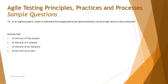This question asks when software is first expected to be delivered that will provide value to the customer. It does not mean handing over the product or releasing directly to end users. The word 'delivered' is a little tricky — it may make you think about releasing to the market, but it's really about the first view of the product, which certainly adds value even when you just demonstrate what you've done. The four options are: at the end of the project, at the end of the release, at the end of an iteration, and at the end of an epic.